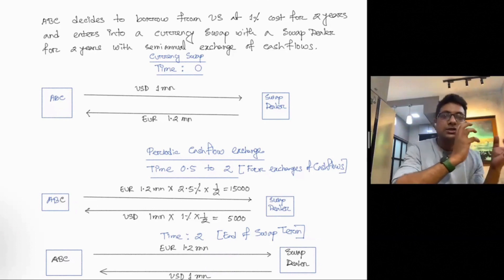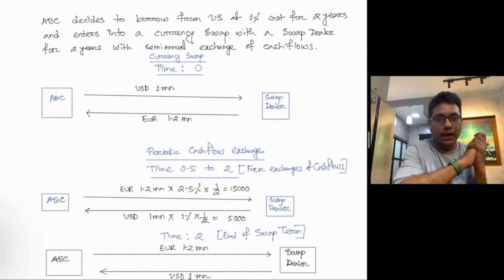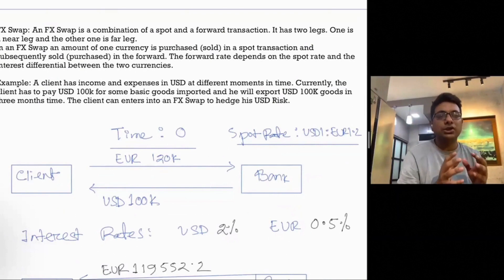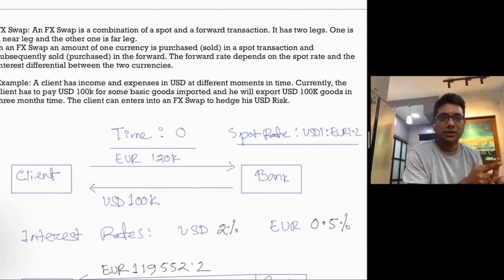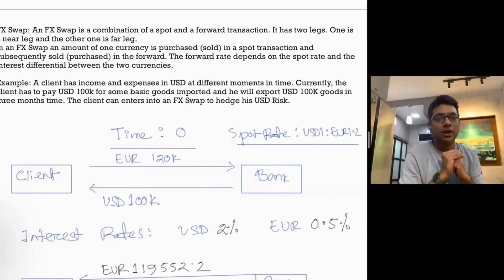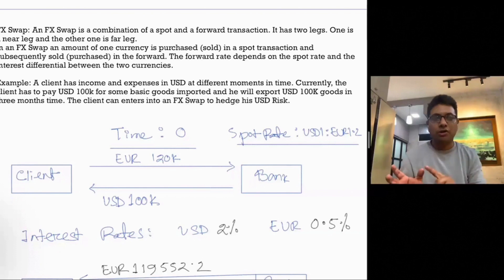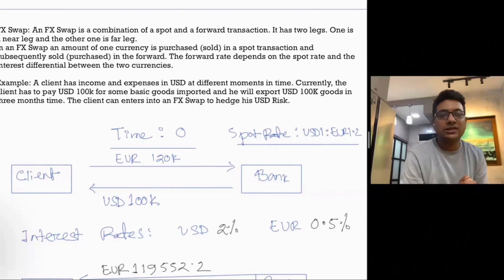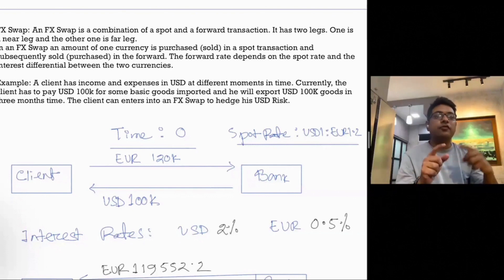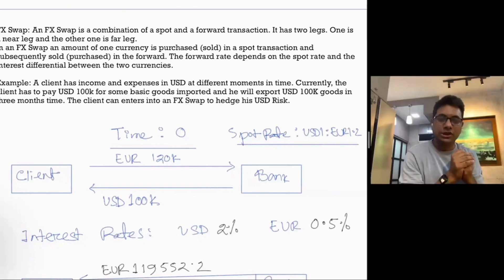An FX swap is virtually a combination of a spot and a forward transaction. FX swap has two legs: a near leg and a far leg. Going back to the Bangladesh Bank circular, one leg involves a currency purchase at the spot rate, and subsequently the other leg involves selling the currency at the forward rate, which depends on the interest rate differential between the two currencies.